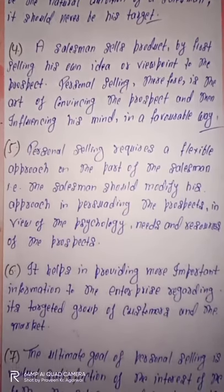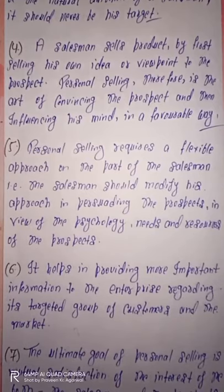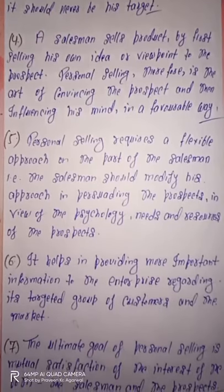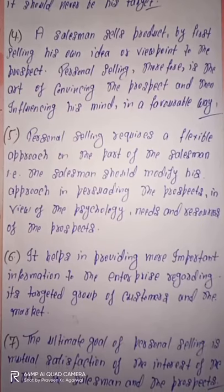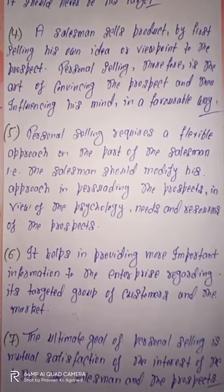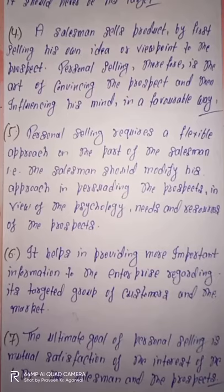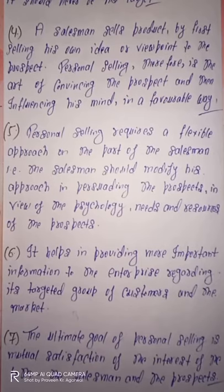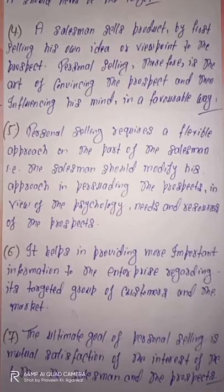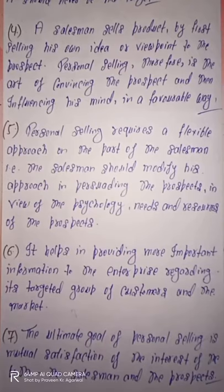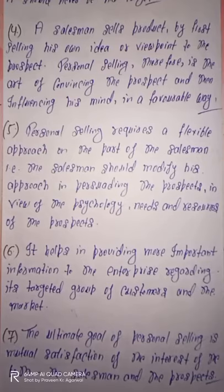The last feature is that the ultimate goal of personal selling is mutual satisfaction of the interests of both the salesman and the prospect. Jab hum personal selling ke ultimate goal ki baat karte hain, to iska main goal hota hai dono parties ke interest ke regarding mutual satisfaction. So these are all the different features or characteristics of personal selling. Thank you.